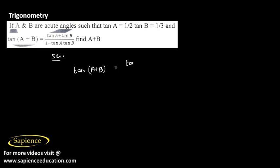tan A plus tan B divided by 1 minus tan A tan B, and we need to find the value of A plus B.